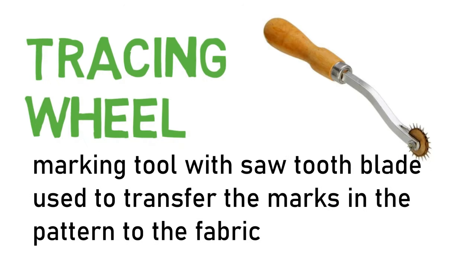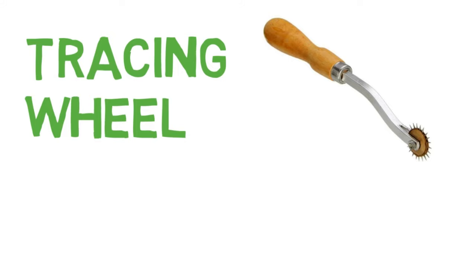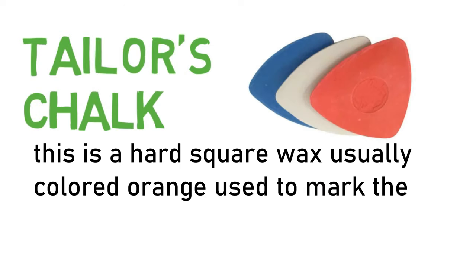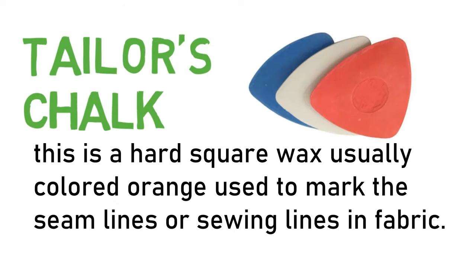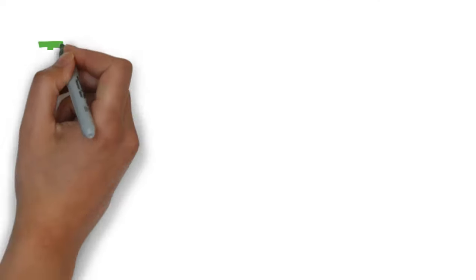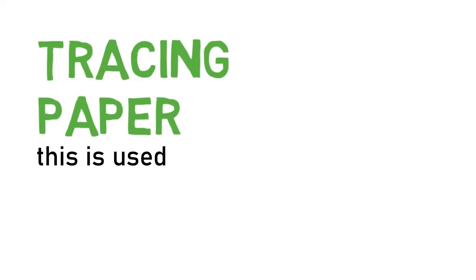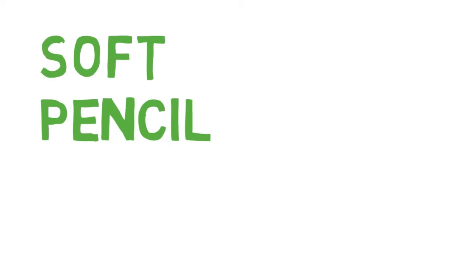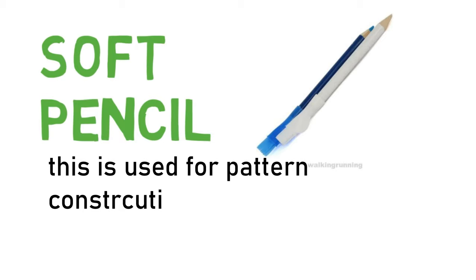Tracing wheel. A marking tool with a sawtooth blade. Used to transfer the marks from the pattern to the fabric. Tailor's chalk. This is a hard square wax, usually colored orange. Used to mark the seam line or sewing lines in fabric. Tracing paper. Used with the tracing wheel to transfer marks from the pattern to the cloth. Soft pencil. This is used for pattern construction.